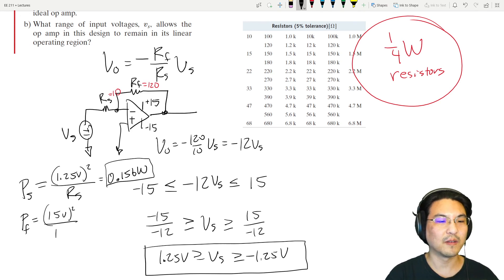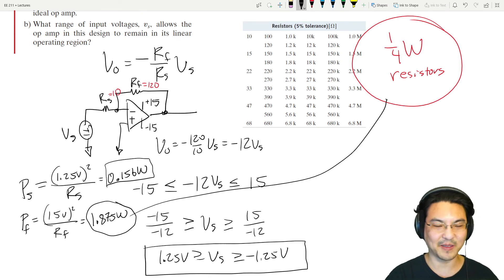15 squared over 120, so that's 225 over 20: 1.875 watts. That's a lot. If we're running a quarter-watt resistor, that thing's going to burn.